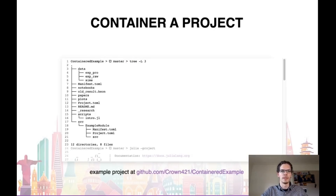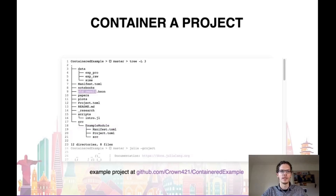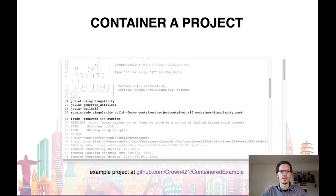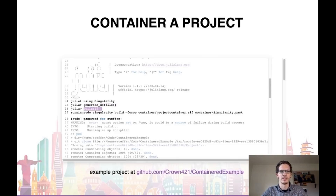Let's consider another example: a small sample project generated using DrWatson. We've additionally added a small intro script, as well as a small module containing our code related to the project. We also have an old results file from times unknown. Now to package everything up, we can start Julia and load the Singularity package. The building functions can now be used to generate a definition or build file, and then build a container from it. Unfortunately, the build process does require superuser privileges, but every instruction from the build file gets printed by default to the terminal as they are being run.